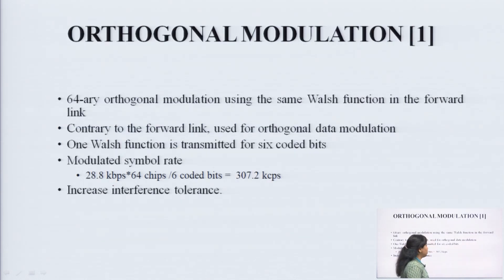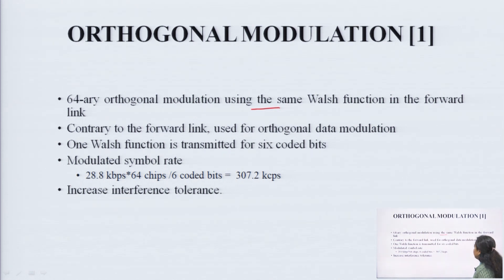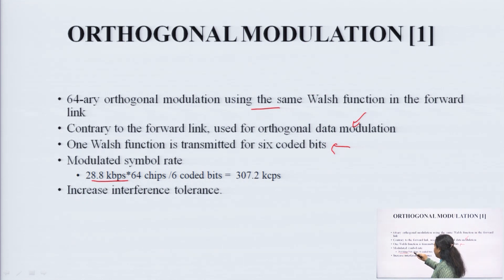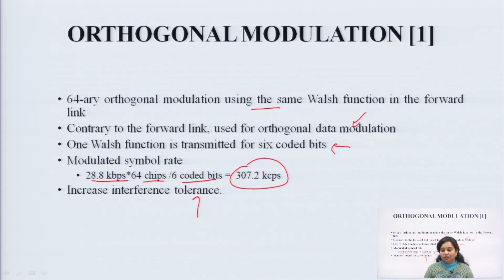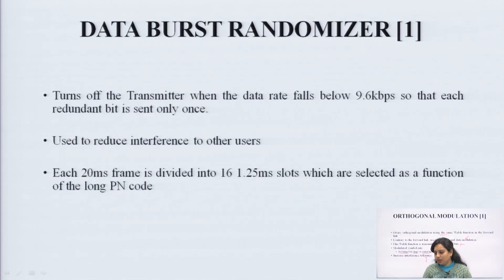For orthogonal modulation in the reverse channel, a 64-array orthogonal modulator using the same Walsh function as the forward link is used for orthogonal data modulation. One Walsh function is transmitted for every 6 coded bits. The modulated symbol rate is 28.8 kbps × 64 chips / 6 coded bits = 307.2 kcps. This increases interference tolerance, meaning less interference in case of this orthogonal modulation.